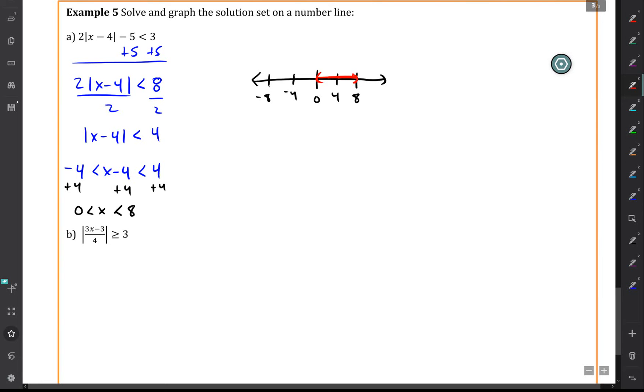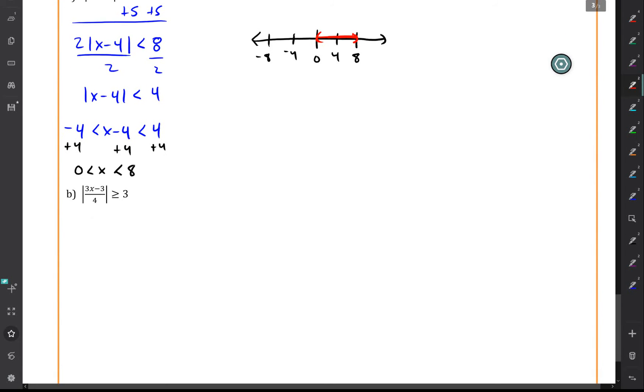It's a strict less than, so I'm using open parenthesis there. Now in the second example, we have the absolute value of 3x minus 3 over 4 is greater than or equal to 3.